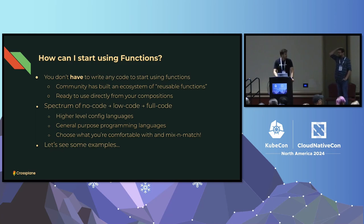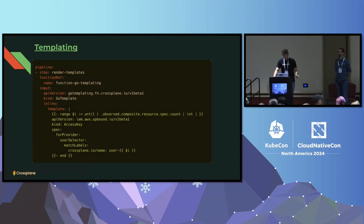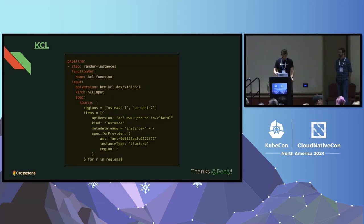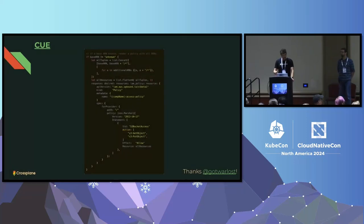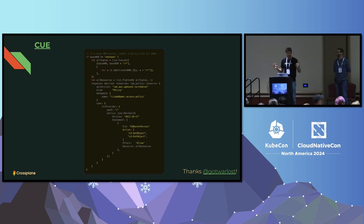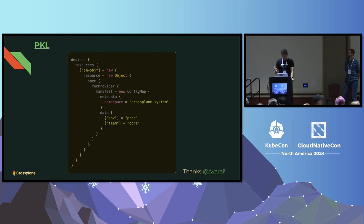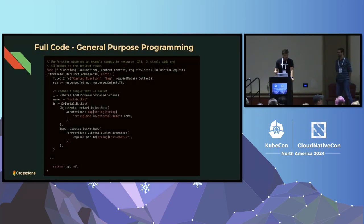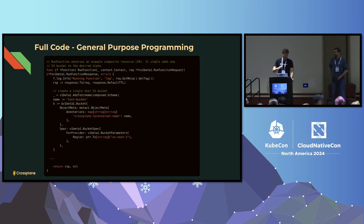Here's what functions look like in Crossplane. This is Go templating — if you've built Helm charts, you may be familiar. Here we're looping around creating access keys. This is a KCL example — looping around regions and creating EC2 instances. This one is Cue — Jared told me to put it in, I think it's creating an IAM policy. Here's Pickle creating ConfigMaps. And here's Go creating an S3 bucket — the full-code example. If you're comfortable with Go, you don't need to context-switch between different things, and you get all the niceties of Go: linting, testing, and all that.